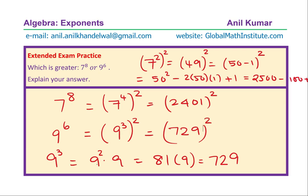Now it is very easy to figure out which base is greater. Clearly 2401 is greater than 729, and so we know the solution: 7 to the power of 8 is far greater than 9 to the power of 6. I hope these steps and the strategies used in this video will help you to solve similar test questions.